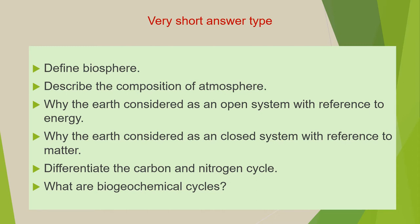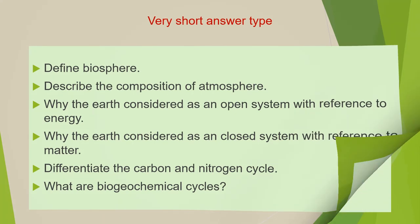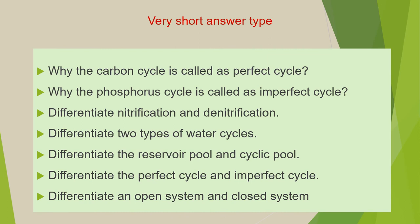Next question: what are biogeochemical cycles? Next: why is the carbon cycle called a perfect cycle? Next: why is the phosphorus cycle called an imperfect cycle? Next: differentiate nitrification and denitrification. Next: differentiate two types of water cycle.